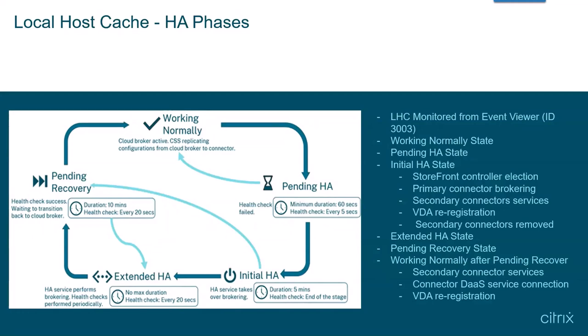If health checks pass, connectors will enter the pending recovery state, which has the same functional level as extended HA. VDAs will continue to be registered with the primary connector, and XML, STA, and VDA services on the secondary connectors will continue to be down. Connectors stay in pending recovery for 10 minutes, with health checks every 20 seconds. If health checks fail, connectors return to extended HA. If health checks pass for the entire 10 minutes, connectors exit pending recovery, return to working normally, services on secondary connectors are brought back online, and VDA registration is triggered so VDAs re-register with the Citrix DAS service.